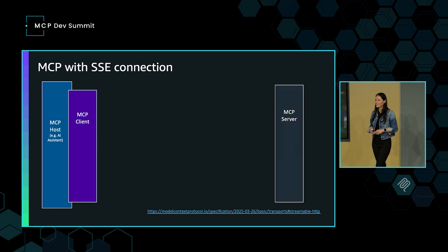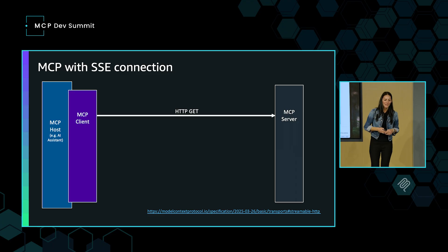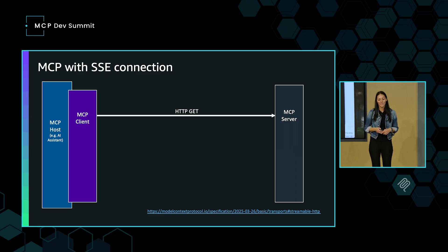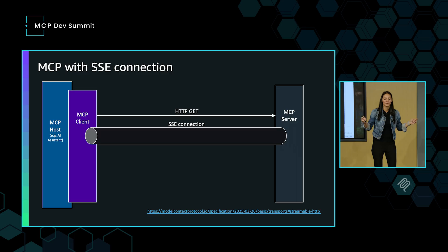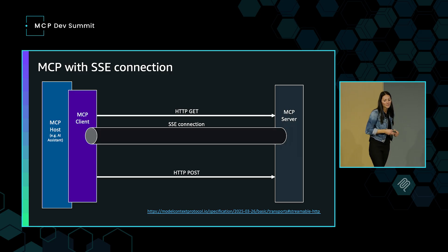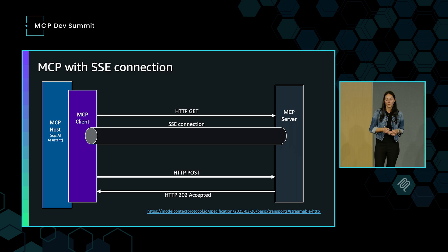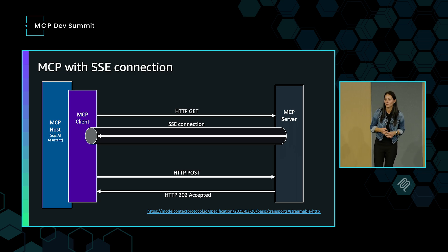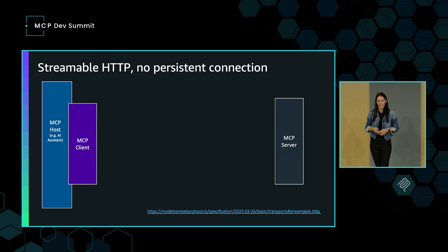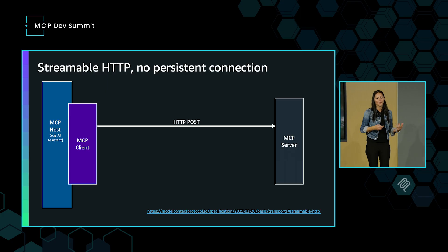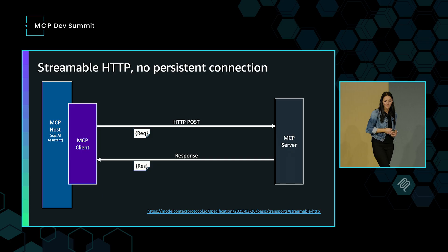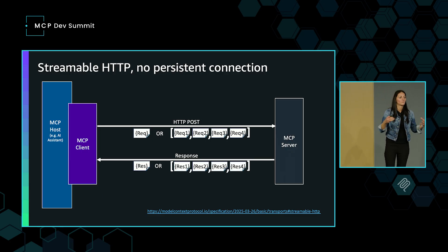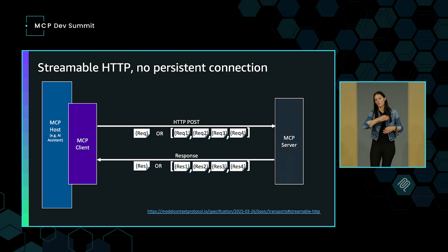With SSE, you do an HTTP GET request, setting up a persistent SSE connection, and then you have an HTTP POST with a specific request that is accepted, and data is sent through that SSE connection. For streamable HTTP, there is no persistent connection — you have a request-response pattern. You send an HTTP POST, you get a response back, and then you send requests or batched requests and similarly get responses back.